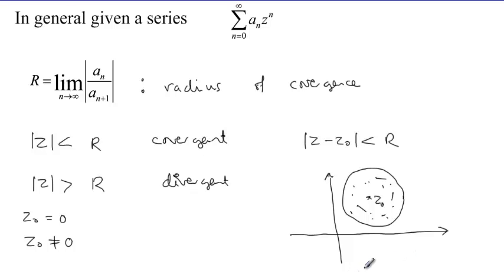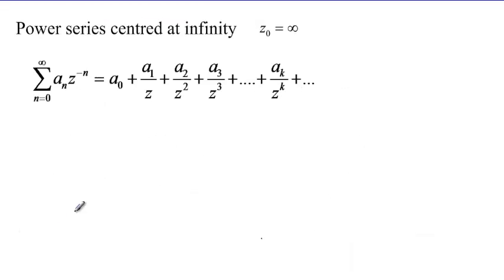Apart from considering series centered at 0 or at another point different from 0 on the complex plane, sometimes we also consider that the series is centered at infinity. In this case, a power series centered at infinity where z_0 equals infinity comes in a form with coefficients a_n but where the powers of z are all negative. This is the situation which tells us that the series is centered at infinity.